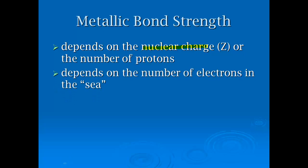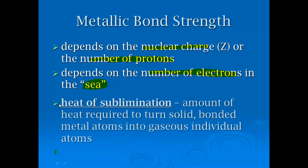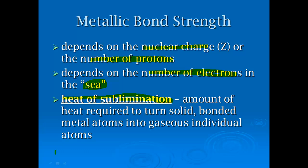The strength of a metallic bond depends on the nuclear charge (number of protons) and the number of electrons in the sea. We can study the strength of metallic bonds using the heat of sublimation — the amount of heat required to turn solid bonded metal atoms into gas, measured in kilojoules per mole. Something with a higher heat of sublimation has a stronger bond, and something with a lower heat of sublimation has a weaker bond.